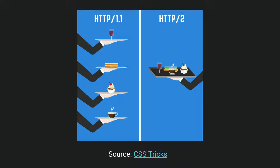I found a great visual on CSS Tricks showing the difference between HTTP/1 and HTTP/2. On the left, each request is one thing, whereas with HTTP/2 you can get the whole thing at once. That's kind of the difference, and that's why HTTP/2 tends to be faster. So it's really cool that if you're using gRPC right now, you can start using HTTP/2 today.